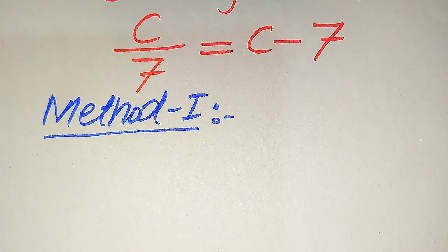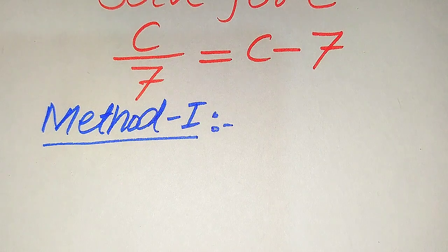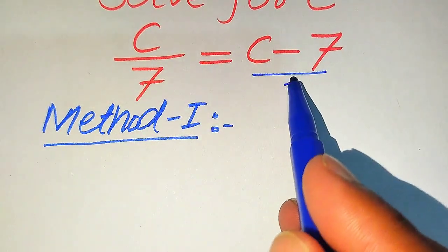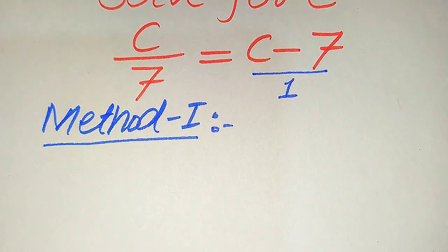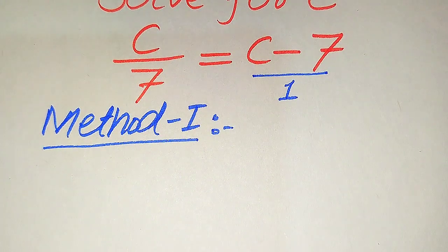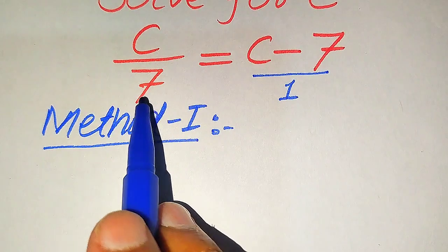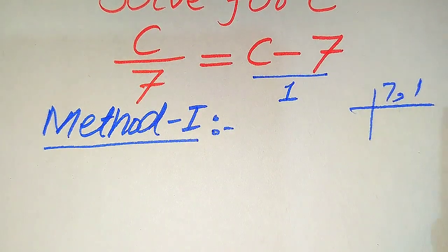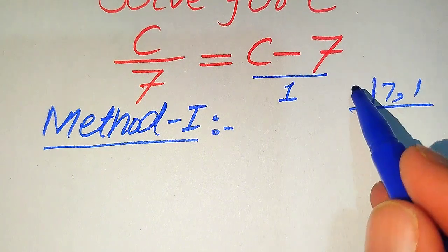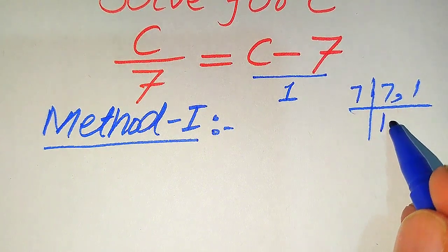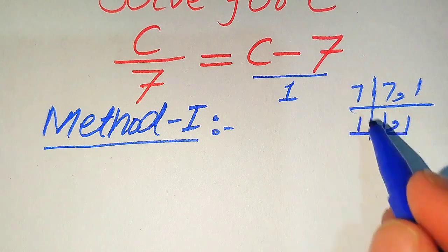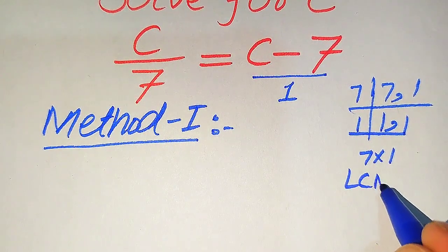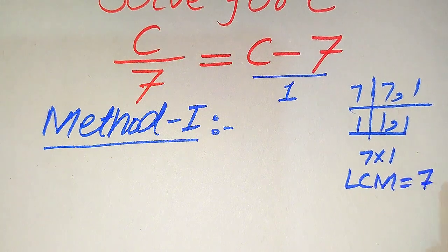First we move to Method 1. Here you see that the denominator of the right-hand term is 1, and we need to cross multiply. The denominators are 7 and 1, so we take the LCM of 7 and 1. Since 7 is divisible by 7 and 1, the LCM of 7 and 1 is 7.